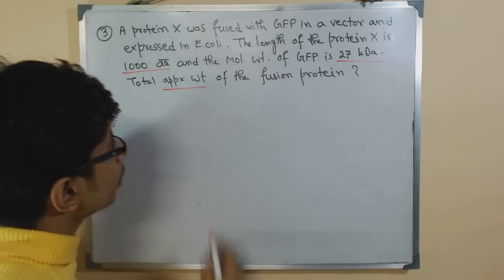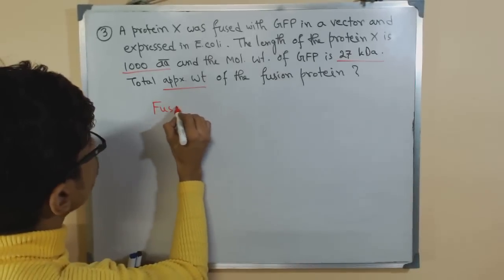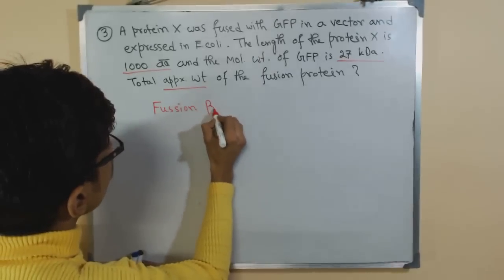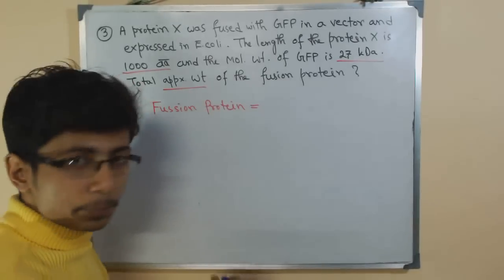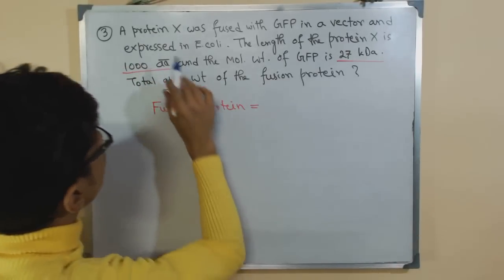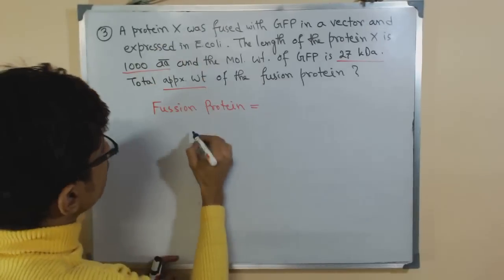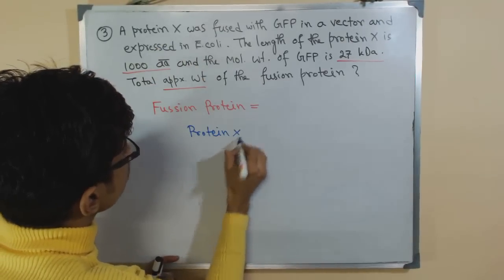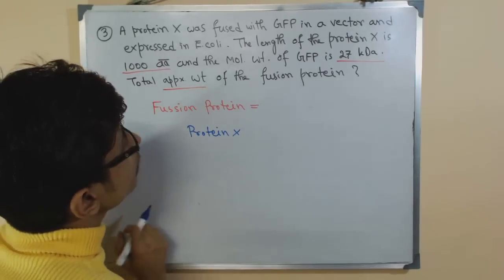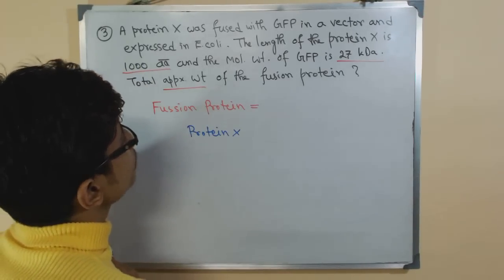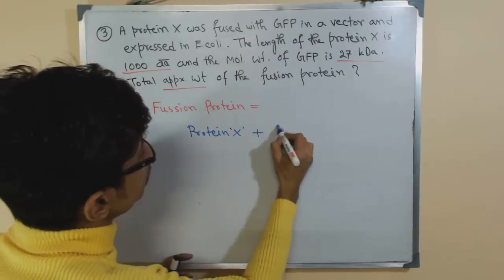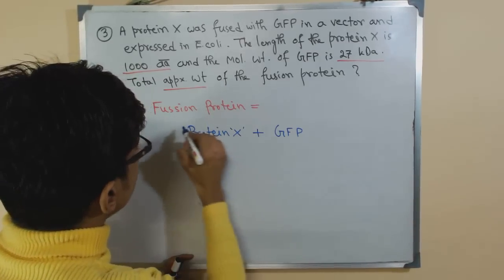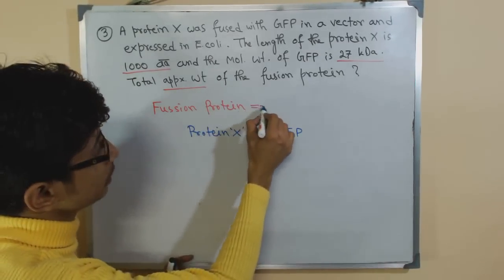When you talk about the fusion protein, first thing we need to notice is that we have a protein that is our desired protein X, protein X that is in our hand consisting of 1000 amino acids.